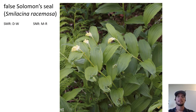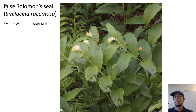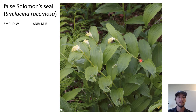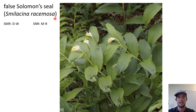Next up: false Solomon's seal, Smilacina racemosa. Some botanists also call this Maianthemum racemosum — you might see that in some books — and remember Maianthemum is the same genus as false lily of the valley, so you might notice some similarities there. The flowers look pretty similar to false lily of the valley, and the leaves also have the same kind of parallel veins and vague shape. For purposes of this course we'll call it Smilacina racemosa. When I was trying to remember this name, it always made me think of mimosas.